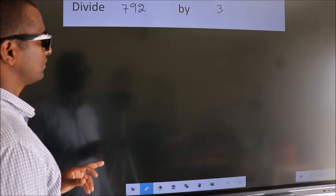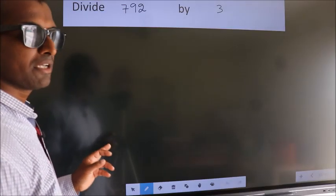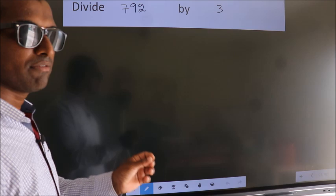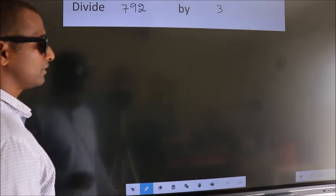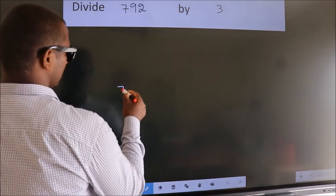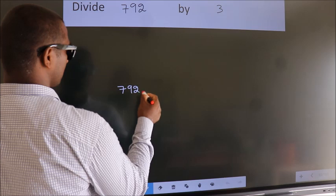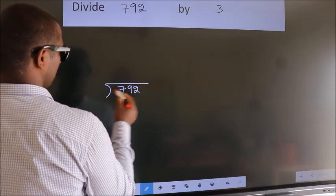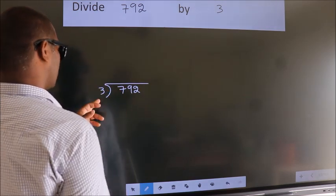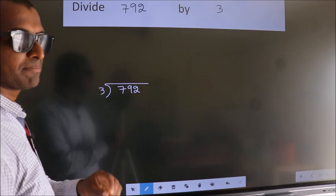Divide 792 by 3. To do this division, we should frame it in this way. 792 here, 3 here. This is your step 1.